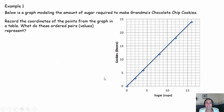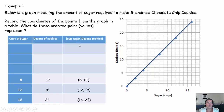In this first example, we're going to look at the amount of sugar required to make grandma's chocolate chip cookies. Record the coordinates of points from the graph in the table. What do these ordered pairs or values represent? Anytime you see one of the blue squares, record in the table what those points are — the coordinates and what they mean in terms of the problem. Pause the video, come on back.